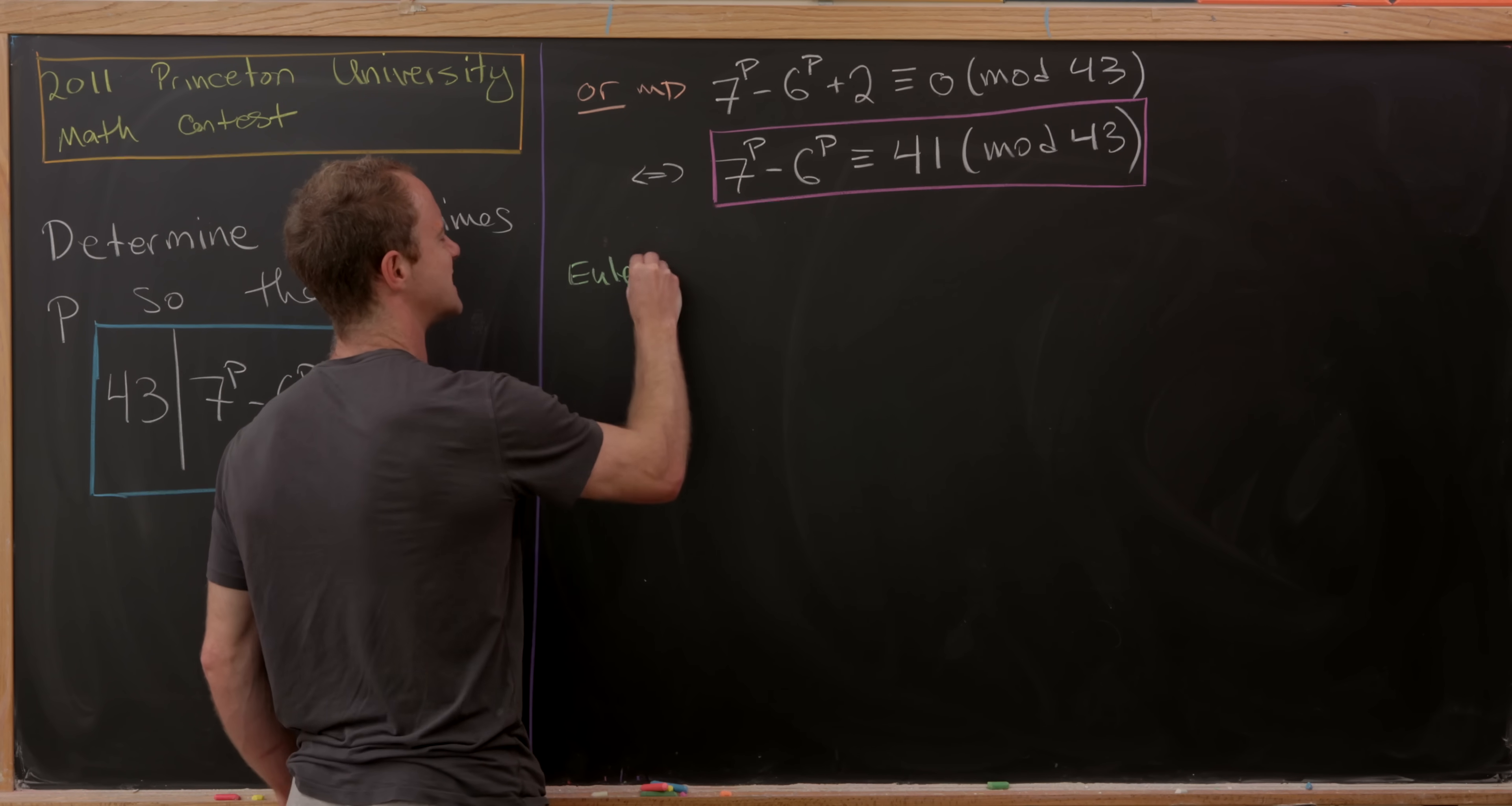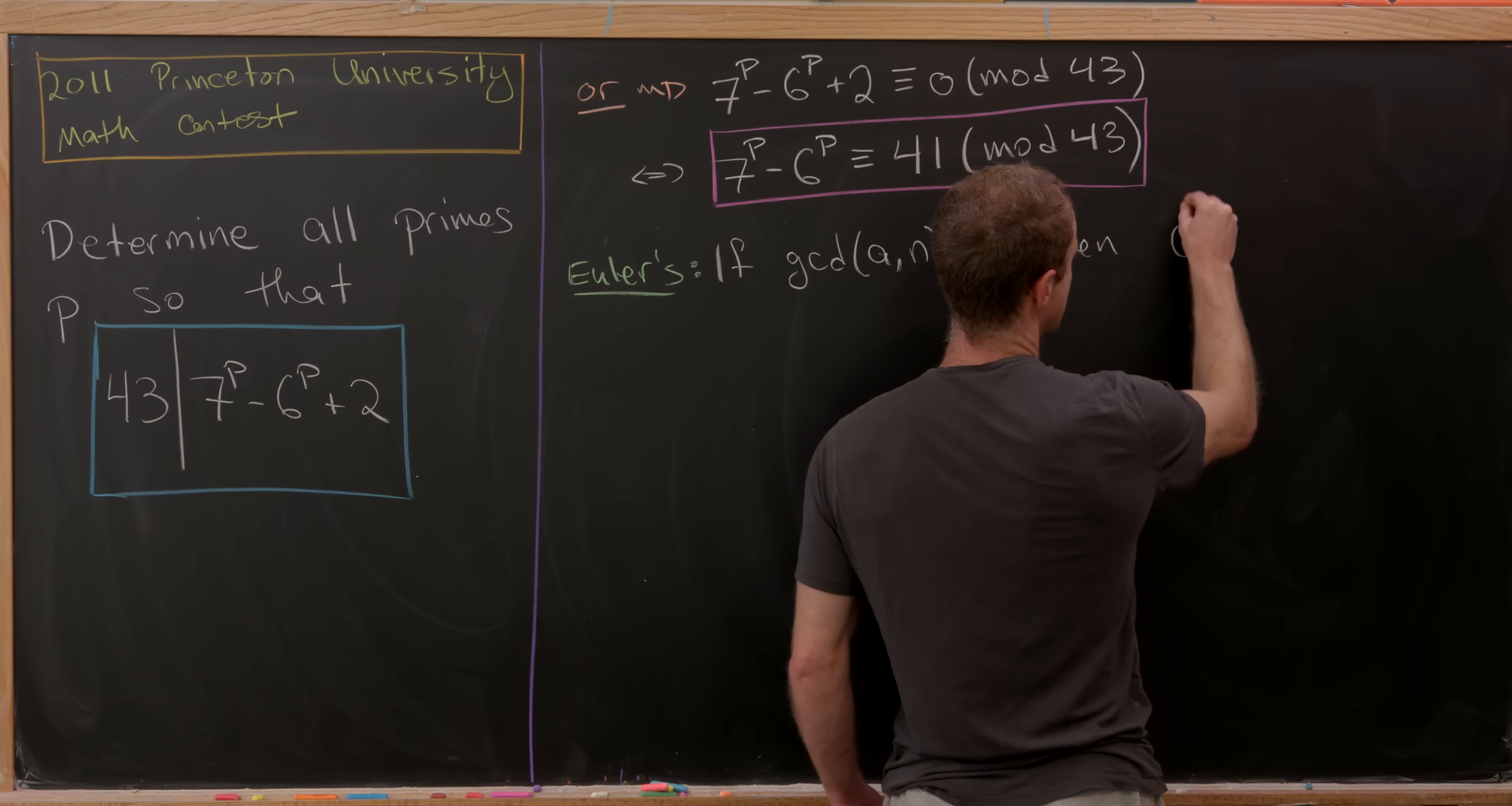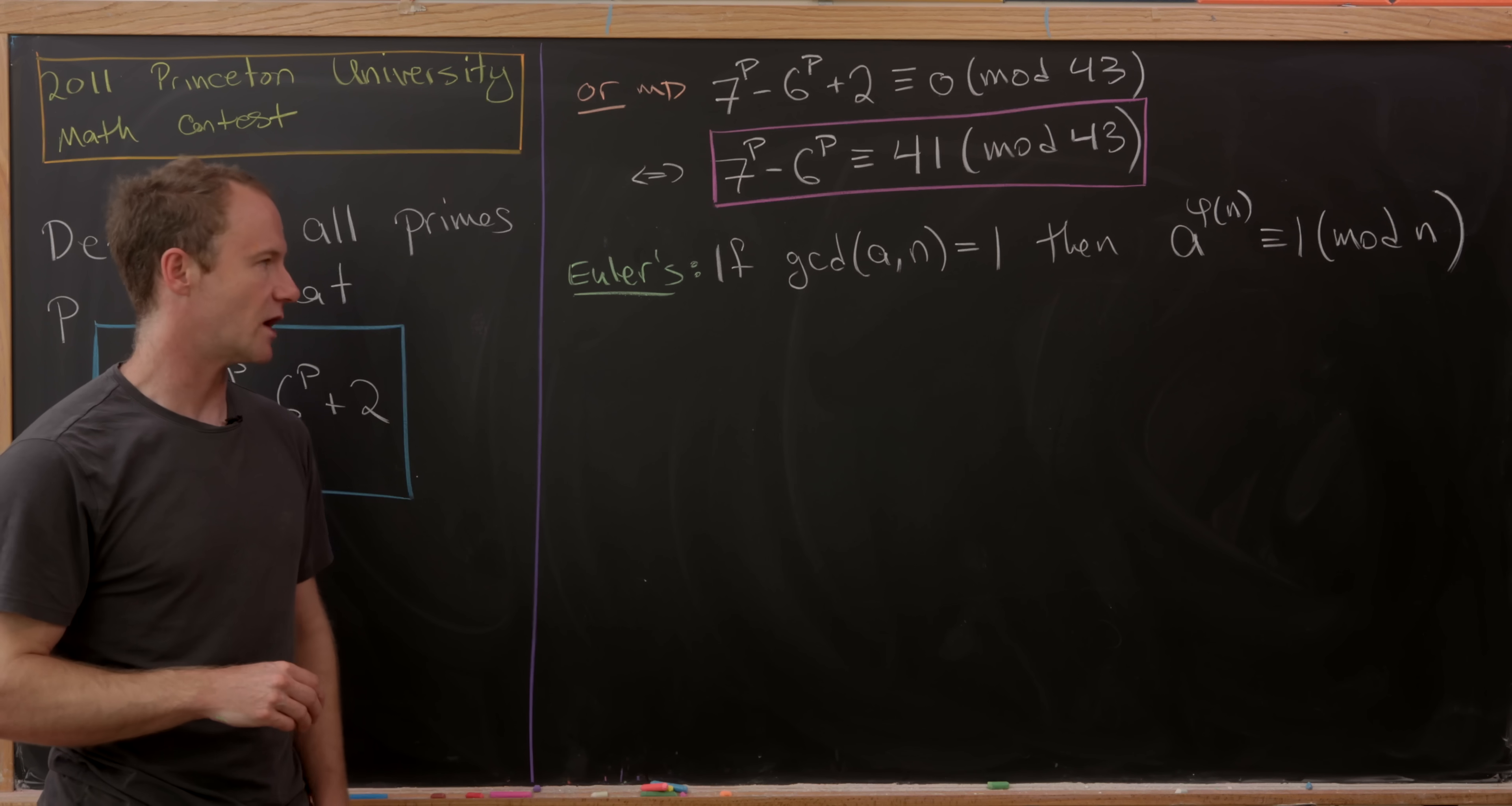Let's state it as Euler's theorem first. That says if the GCD of a number A and a number N is equal to 1, then A^φ(N) is congruent to 1 modulo N. And φ(N) is Euler's totient function which counts the number of numbers that are relatively prime to N between 1 and N.